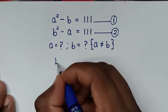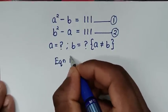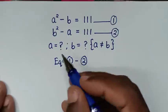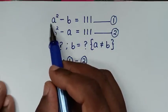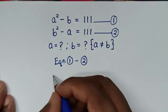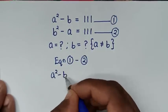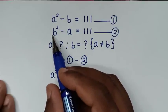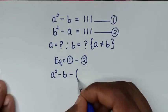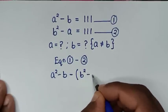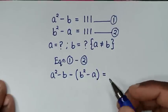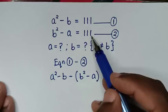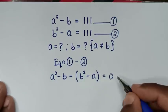In the first step, we take equation 1 minus equation 2. From equation 1, the left side is a² minus b, and from equation 2, the left side is b² minus a. So we have (a² minus b) minus (b² minus a) equals 111 minus 111, which is 0.